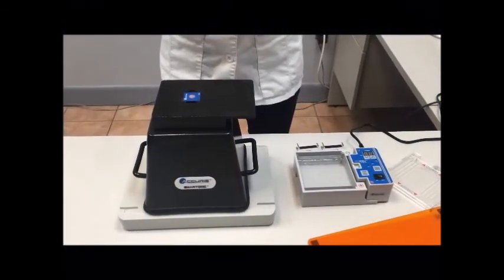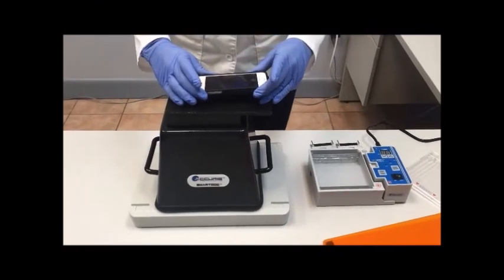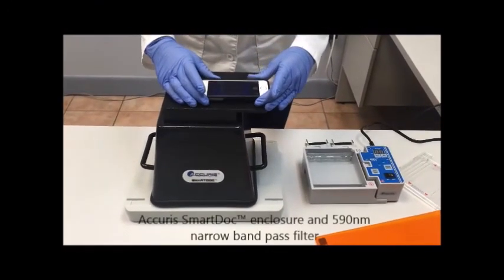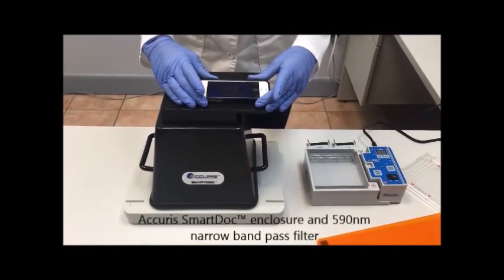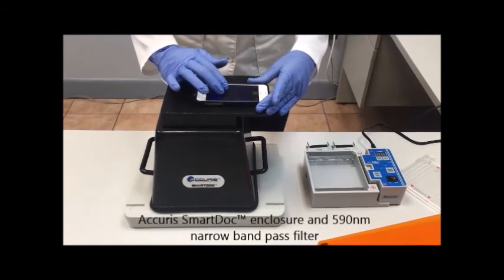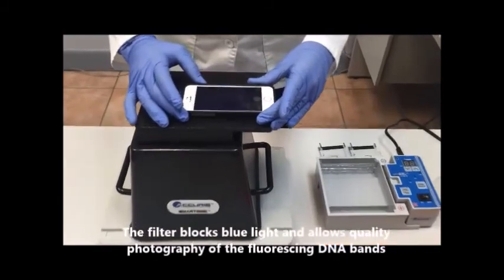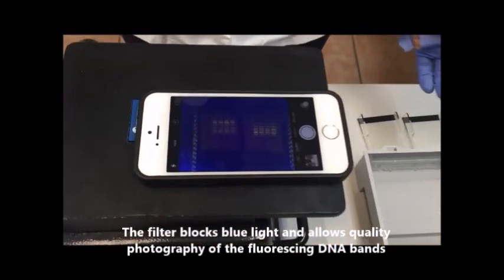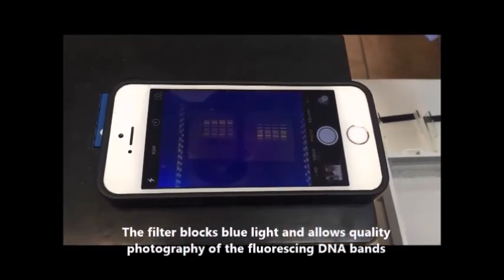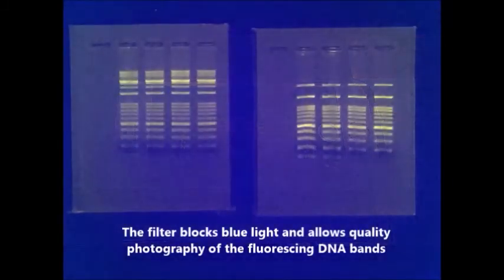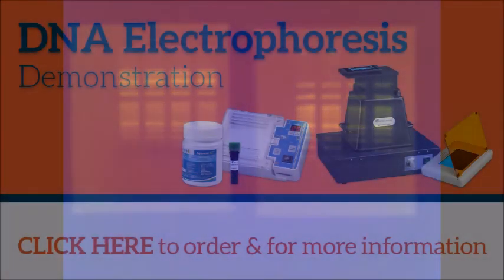Our final step is to document our results by taking pictures of the gels. We're using the Acuras Smart Dock Imaging Enclosure and a 590 nanometer narrow band pass filter. This special filter blocks the blue light and allows high quality photography of the fluorescing DNA bands using an iPhone or other smartphone with camera. Thanks for watching.